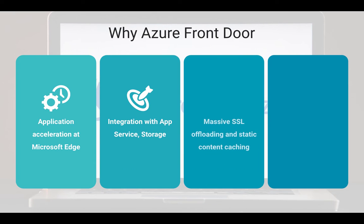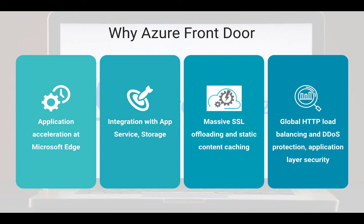Azure Front Door is a secure global entry point for your web application. Before the user hits your web application, Azure Front Door sits in front and delivers all the content. It works over HTTP and HTTPS at layer 7 using anycast protocol with split TCP and Microsoft's global network to improve global connectivity. It's an application acceleration platform — a Microsoft edge solution — and it integrates with app services, which we'll demonstrate in the next lecture. It also integrates with storage, functions, and a lot of other features.